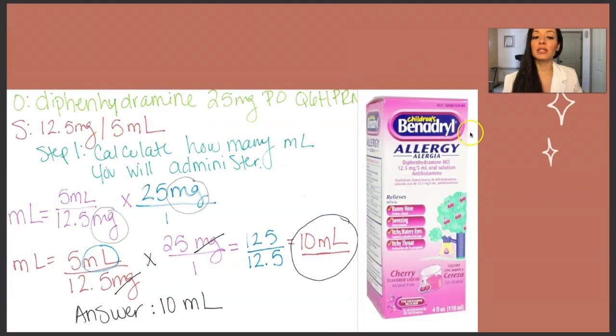The last example that we have is Benadryl or diphenhydramine, right? So diphenhydramine, the order is 25 milligrams orally every six hours as needed. The PRN got cut off there. It comes in 12.5 milligrams per 5 milliliters. Again, we need milliliters. So because we put milliliters here, we put milliliters at the top. 5 milliliters contains 12.5 milligrams.